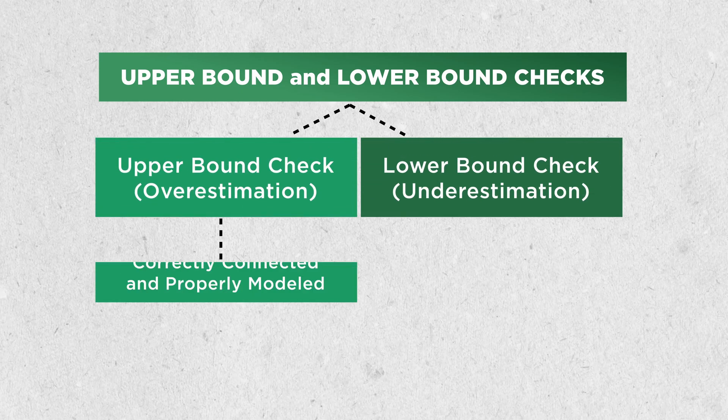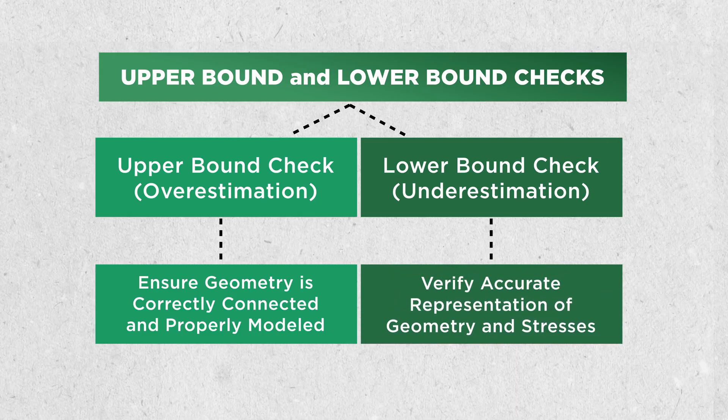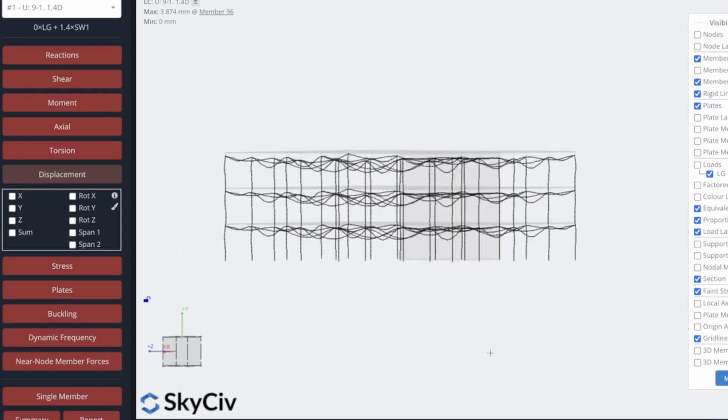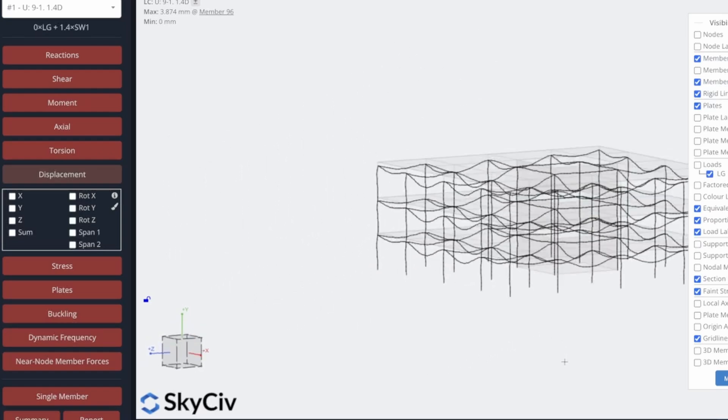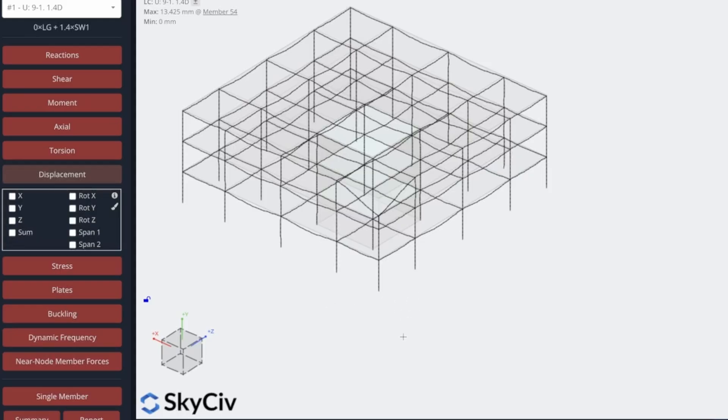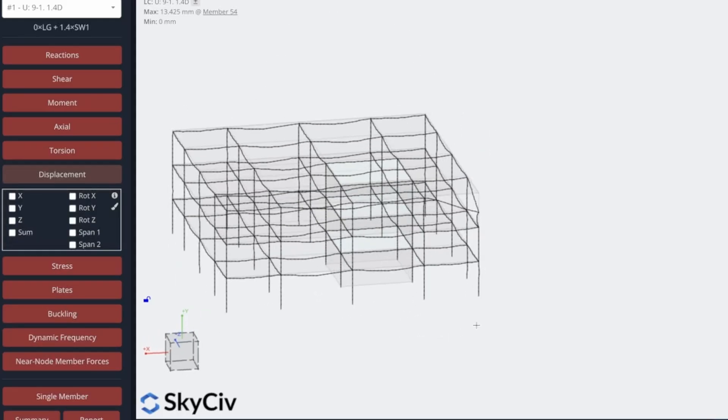Especially when looking at geometry, have you made sure that everything is connected properly? A great check I like to do when reviewing FEA models is looking at the gravity deflection — is it what I'm expecting? You might accidentally identify something that is not connected that should have been, or something deflecting too much because it was too small. It's a really good way to identify errors just by looking at that deflected shape.